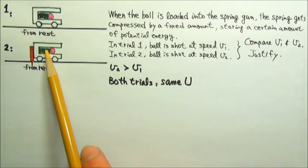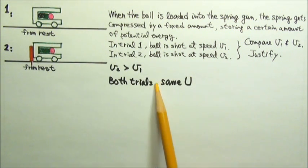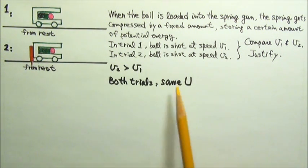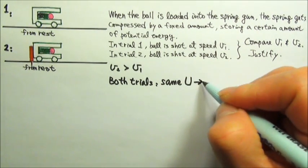In both trials, the compressed spring stores the same amount of potential energy. Because there is no friction or air resistance to turn mechanical energy into heat, all of this potential energy is turned into kinetic energy.